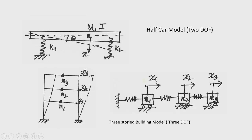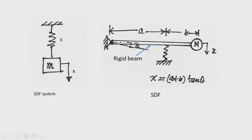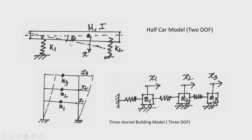Another example: a rigid bar connected with two springs — a half car model — can undergo two types of motion: vertical motion and rotation. In this case, x and θ are independent and cannot be related by any mathematical relation, so this is a two degree of freedom system. In the earlier case x and θ were related, so it was single degree of freedom; here they are independent and we must analyze this as a two degree of freedom system.